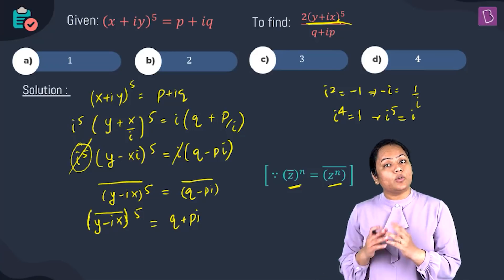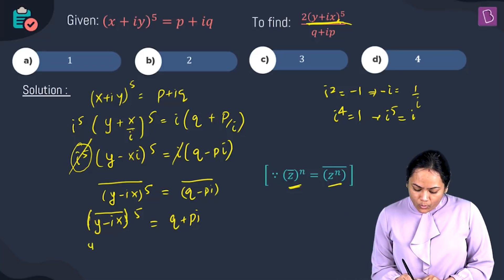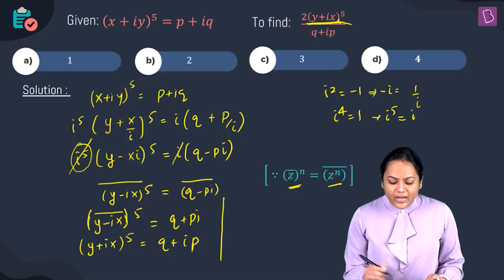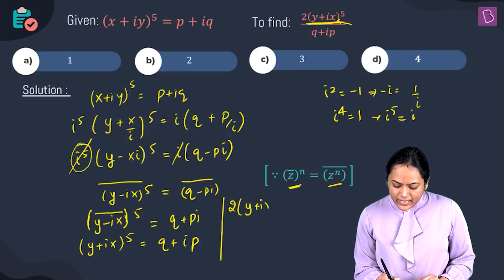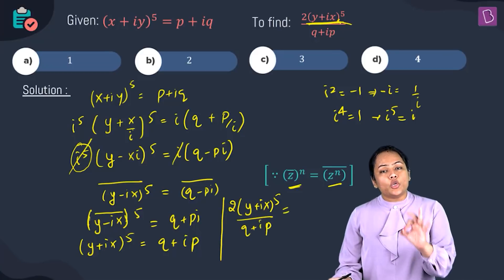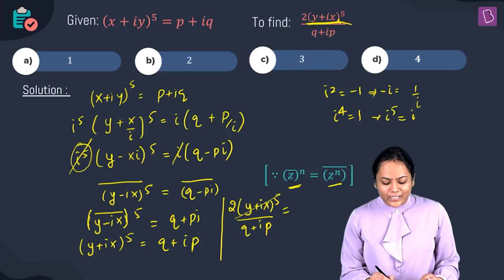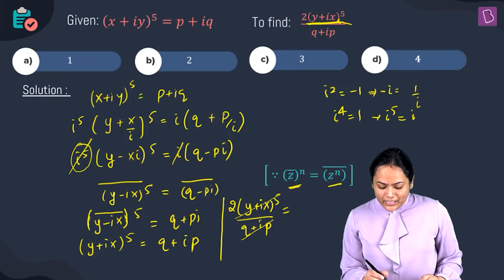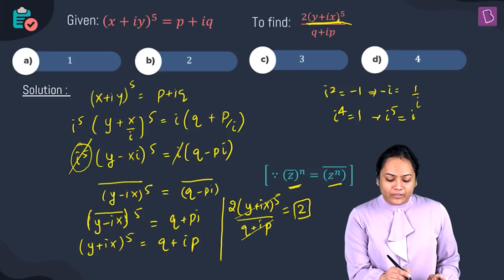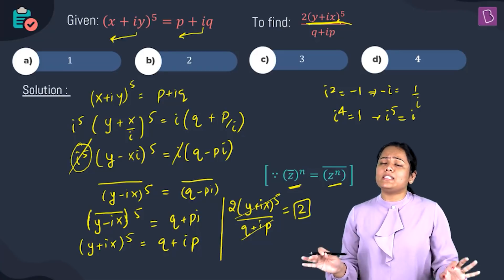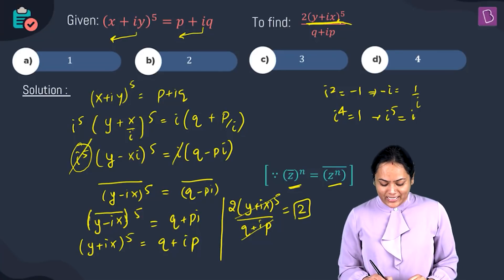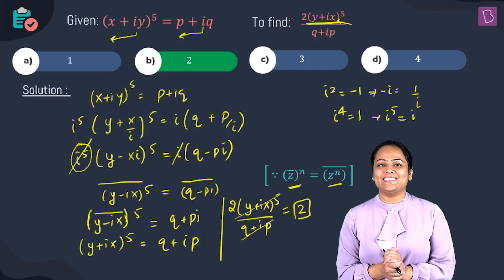The conjugate of (y - ix) is (y + ix), so (y + ix)^5 equals q + ip. The question asks for 2(y + ix)^5 divided by (q + ip). Since numerator (y + ix)^5 and denominator (q + ip) are equal, they cancel out, leaving the final answer as 2. The answer is option B.